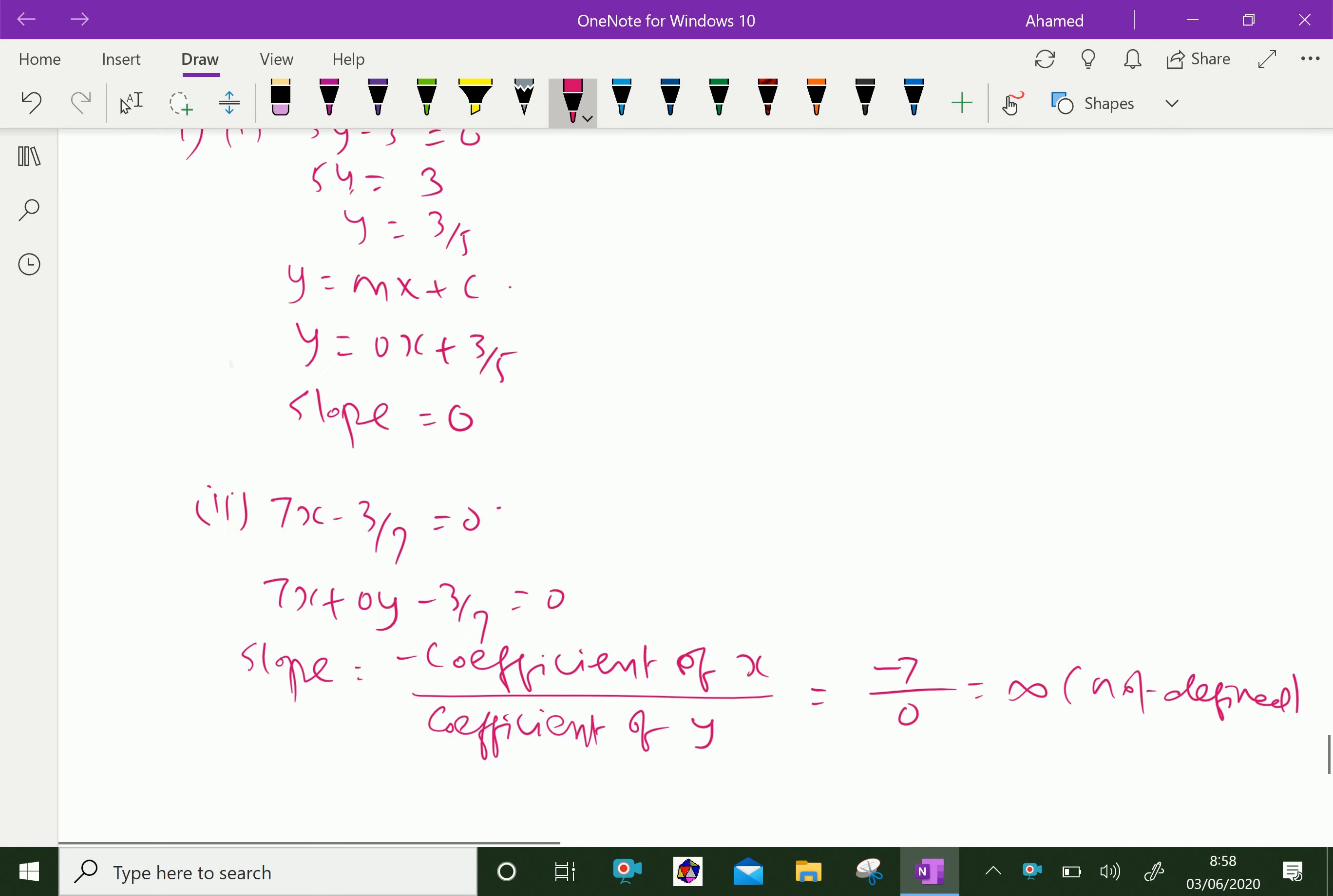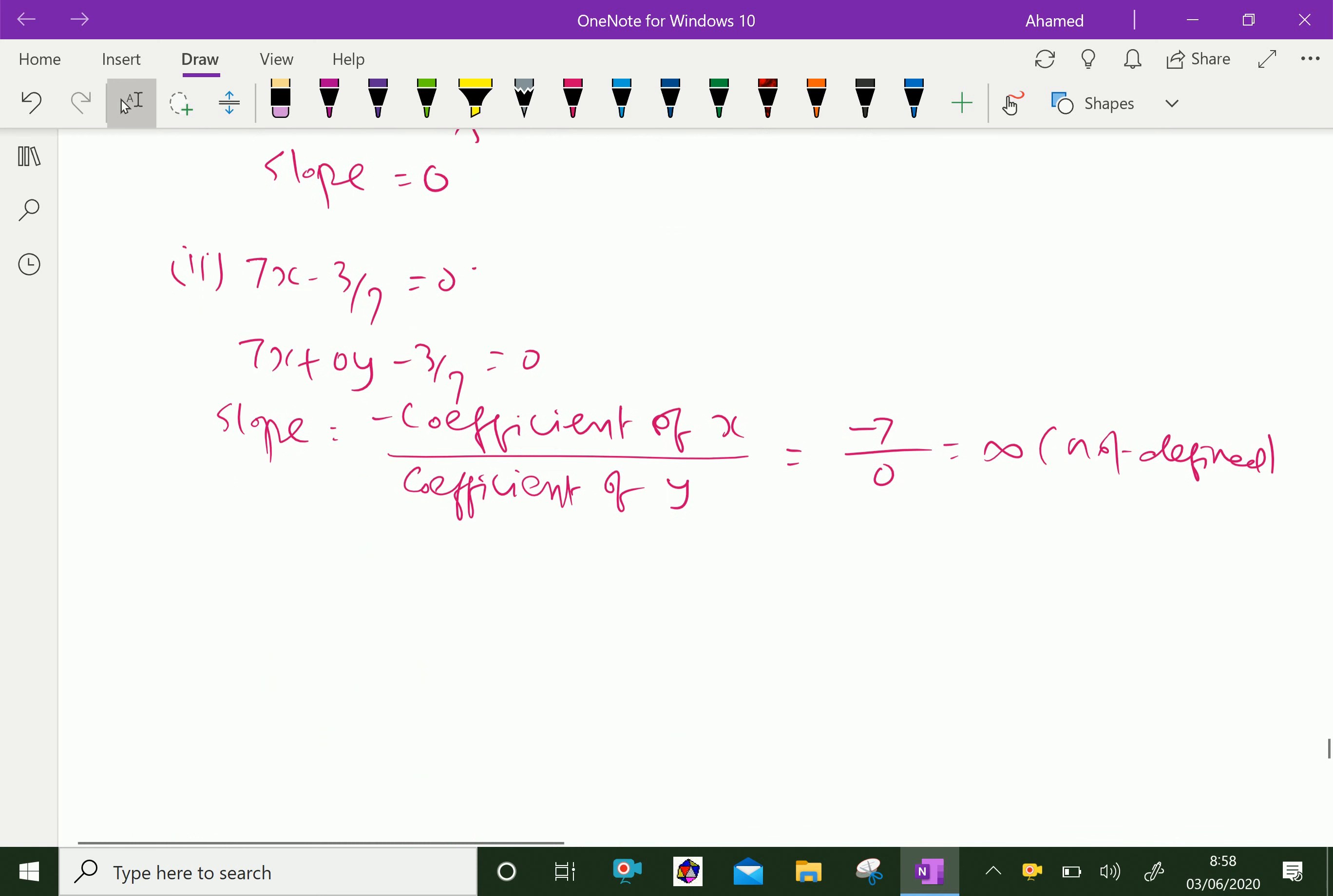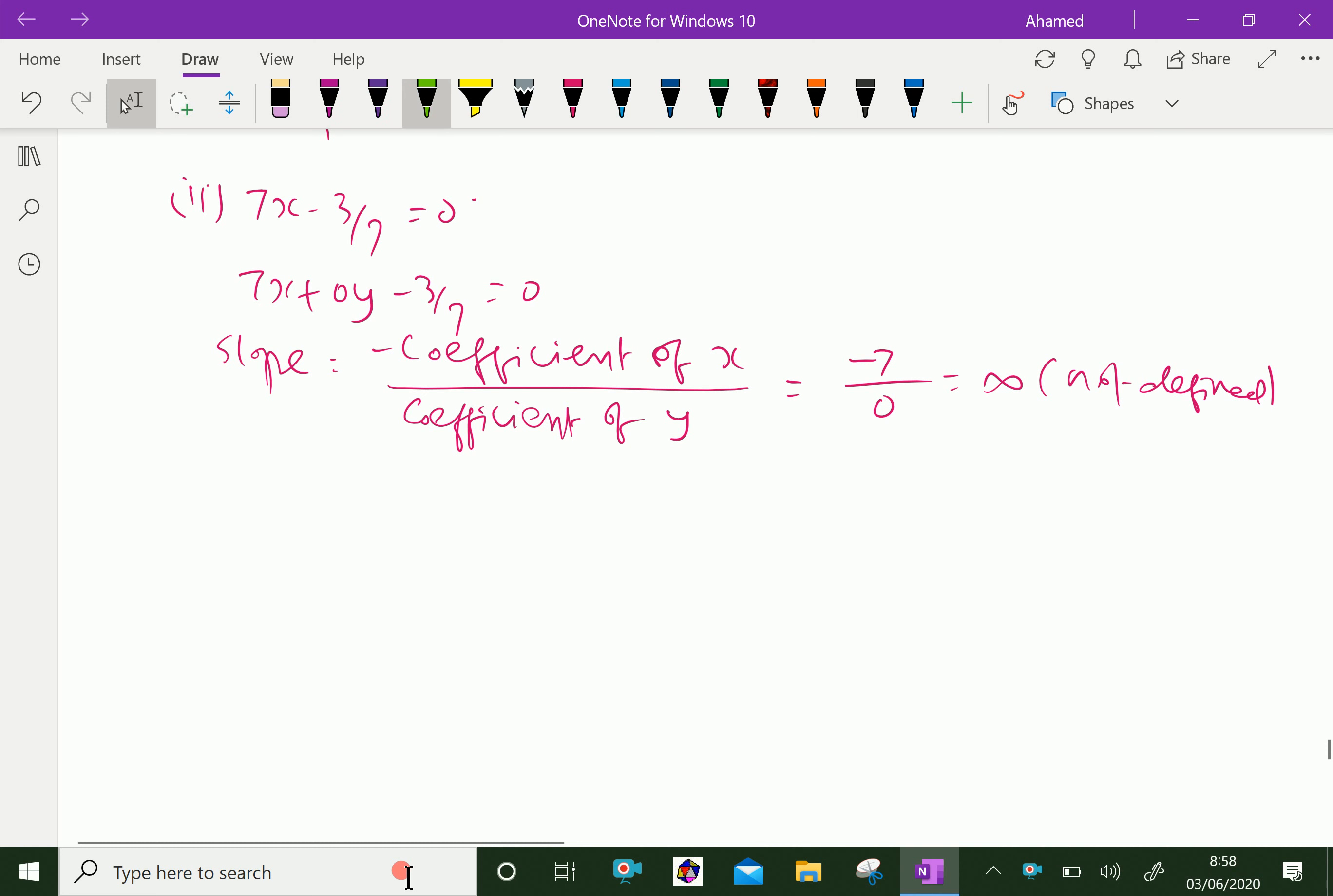Next question. Find the slope of the line which is parallel to y = 0.7x - 11. Here, the given line is y = 0.7x - 11.